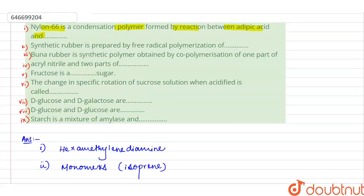Now the third question is: Buna rubber is synthetic polymer obtained by copolymer of one part of acrylonitrile and two parts of what?